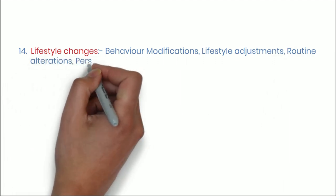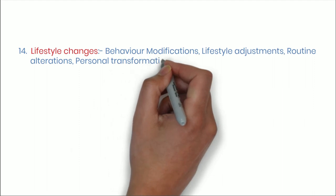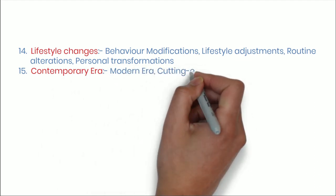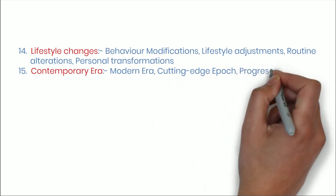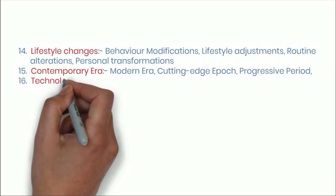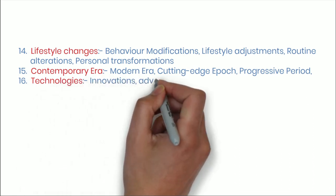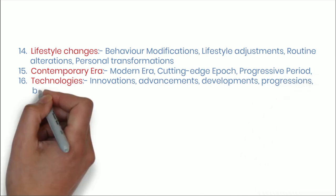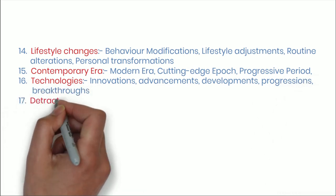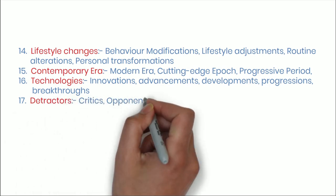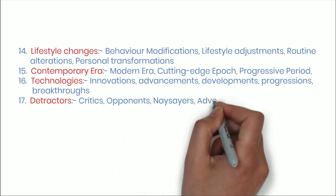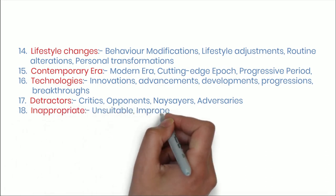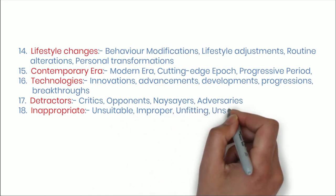Number fifteen: Contemporary era — modern era, cutting-edge epoch, progressive period. Number sixteen: Technologies — innovations, advancements, developments, progressions, breakthroughs. Number seventeen: Detractors — critics, opponents, naysayers, adversaries. Number eighteen: Inappropriate — unsuitable, improper, unacceptable, irrelevant, indecent.